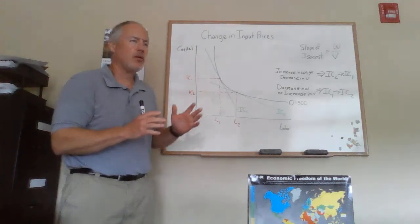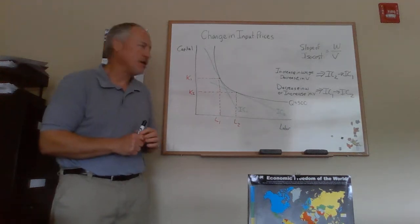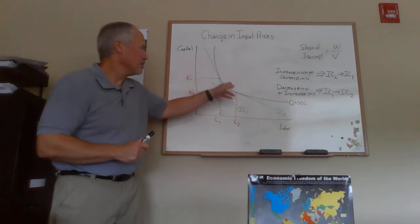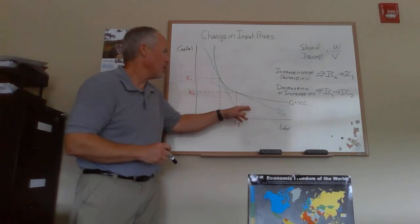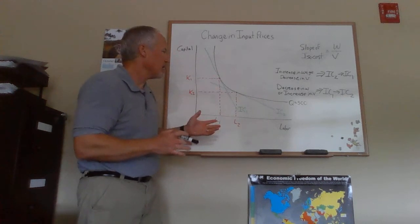This video is going to talk about how a change in input prices is going to affect cost minimization by a firm. So what I'm drawing up here is I've drawn in an isoquant on our diagram, and I have the isoquant up here. It's arbitrarily set at 50.